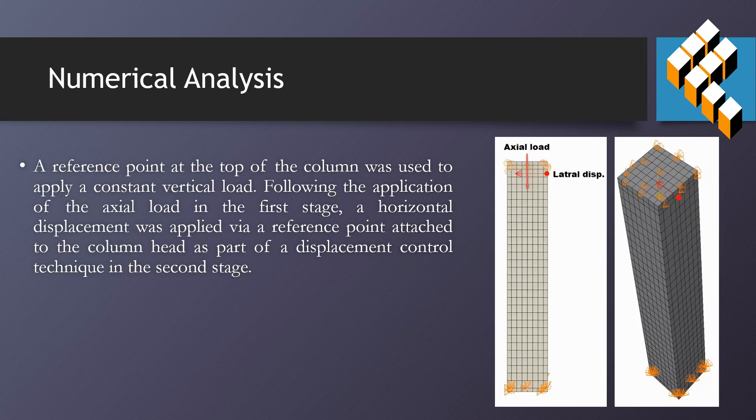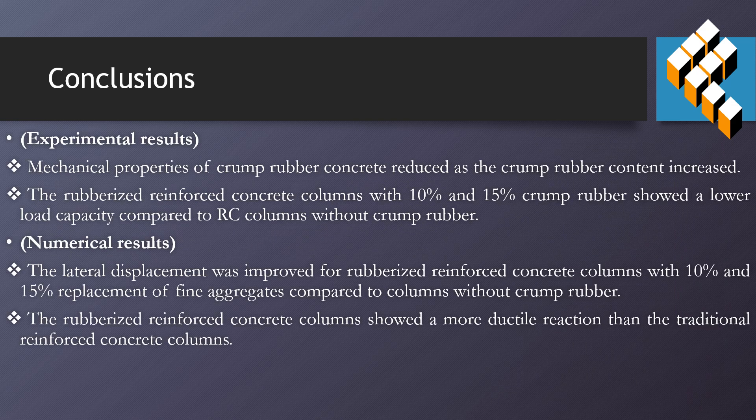A reference point at the top of the column was used to apply a constant vertical load in the first stage. In the second stage, a horizontal displacement was applied via a reference node attached to the column head using the displacement control technique.